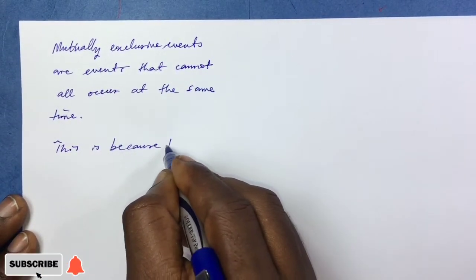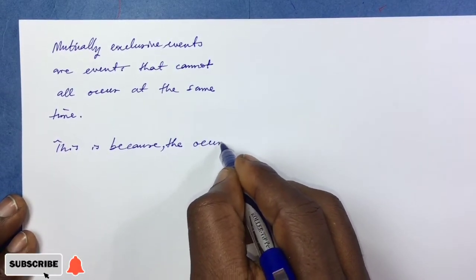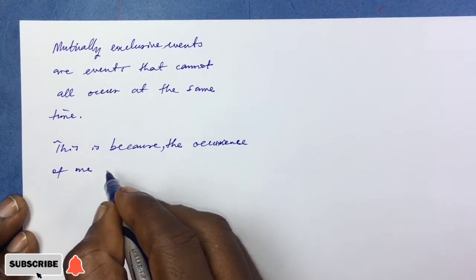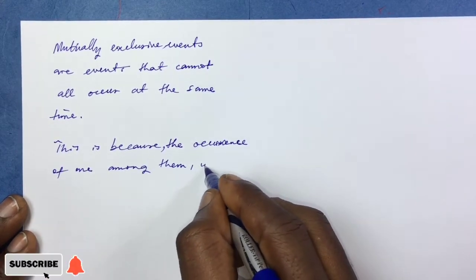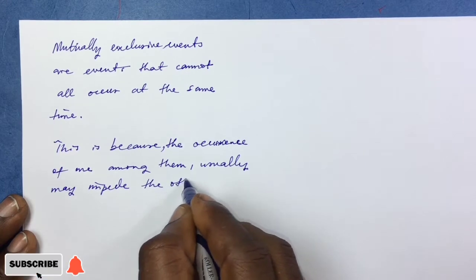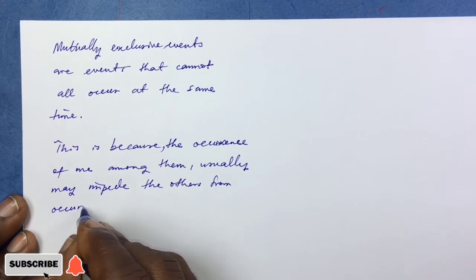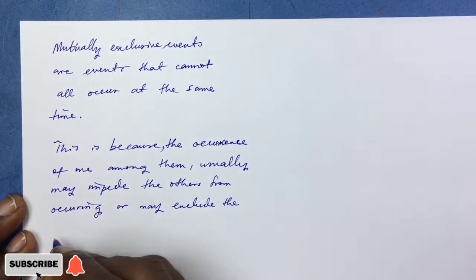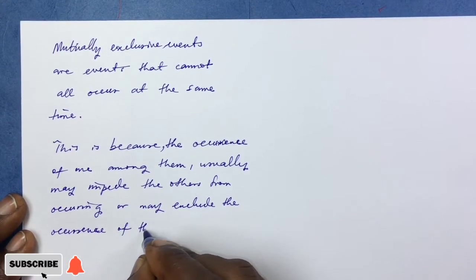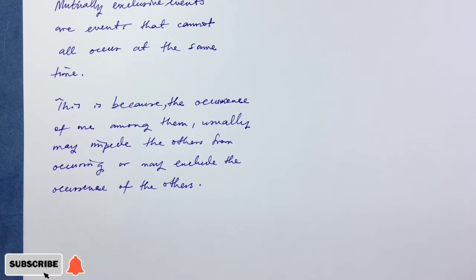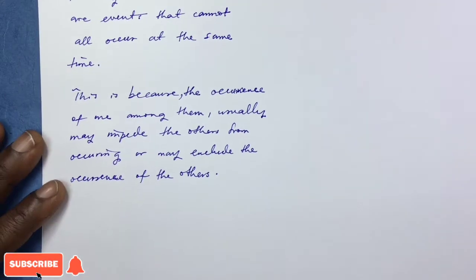Mutually exclusive events cannot all occur at the same time because the occurrence of one among them may impede the others from occurring — it may exclude the occurrence of the others. When two or more events cannot occur at the same time, those events are mutually exclusive. One happening implies the other cannot happen.